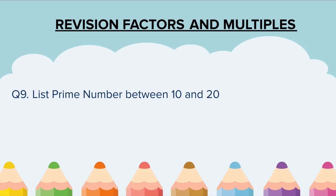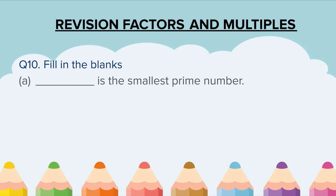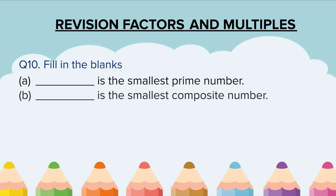Yes or no? Question 9. List prime numbers between 10 and 20. Question 10. Fill in the blanks. A. Dash is the smallest prime number. B.